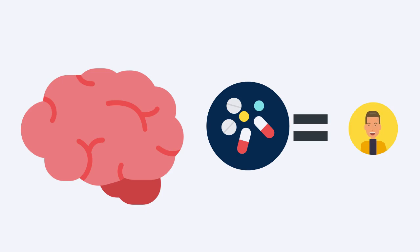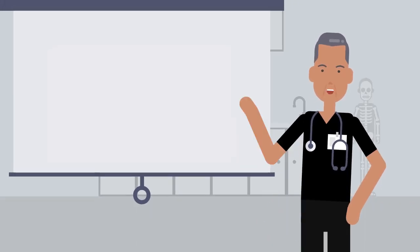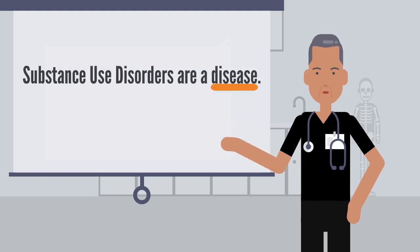Instead, the substance becomes necessary to keep the person from feeling really, really bad. The brain becomes dependent on the substance, which is why substance use disorders are considered a disease.